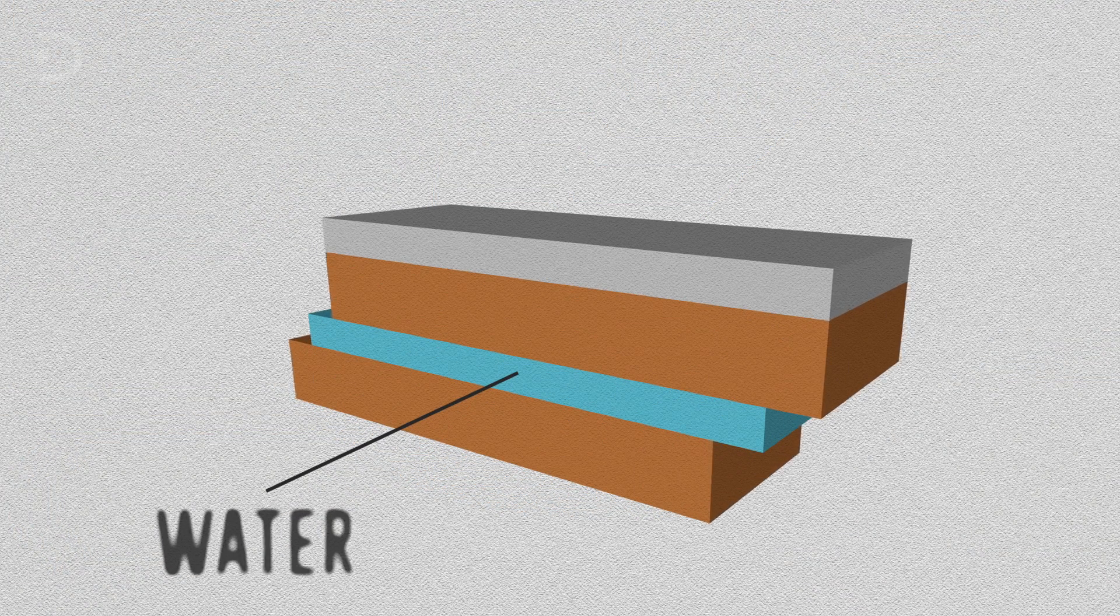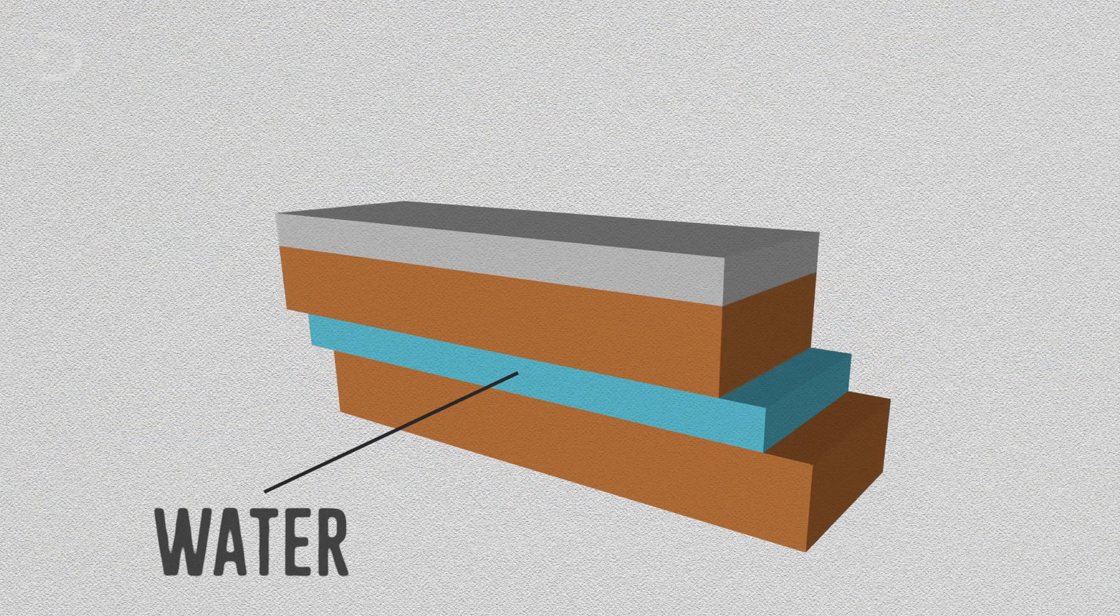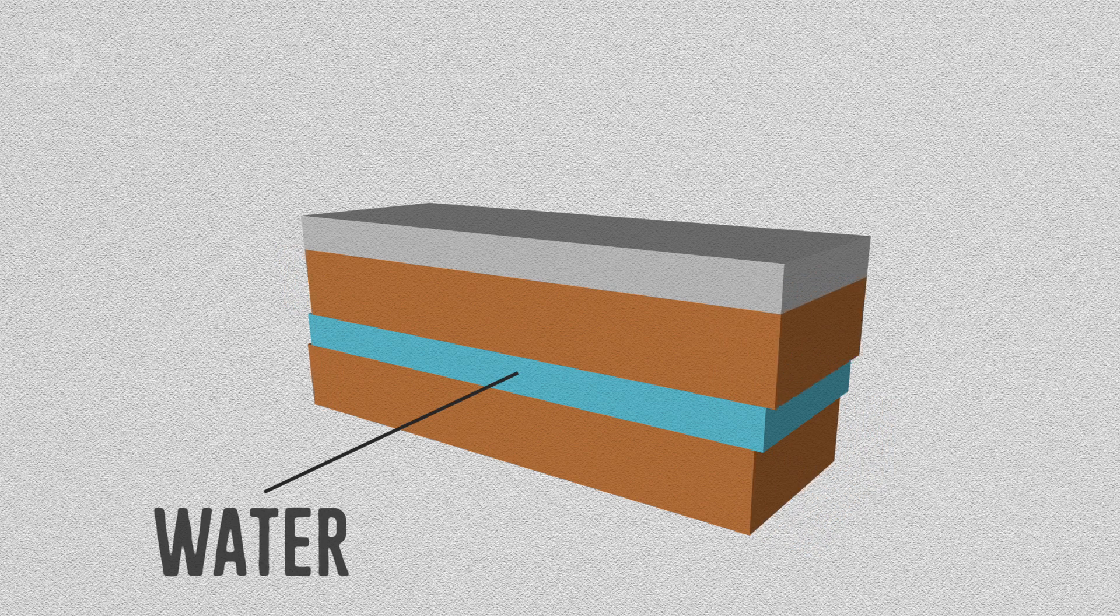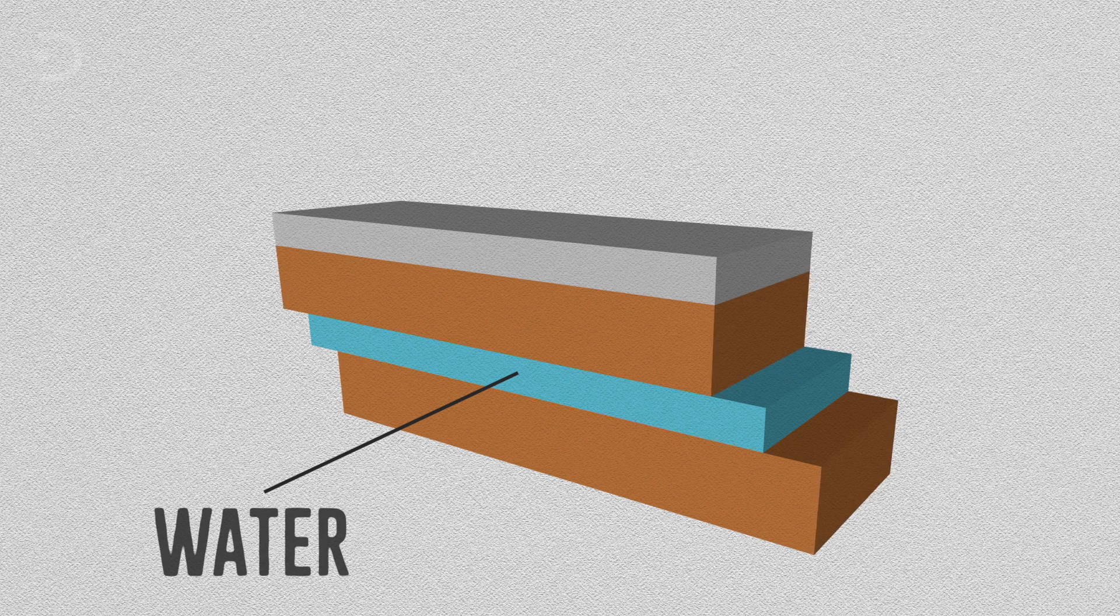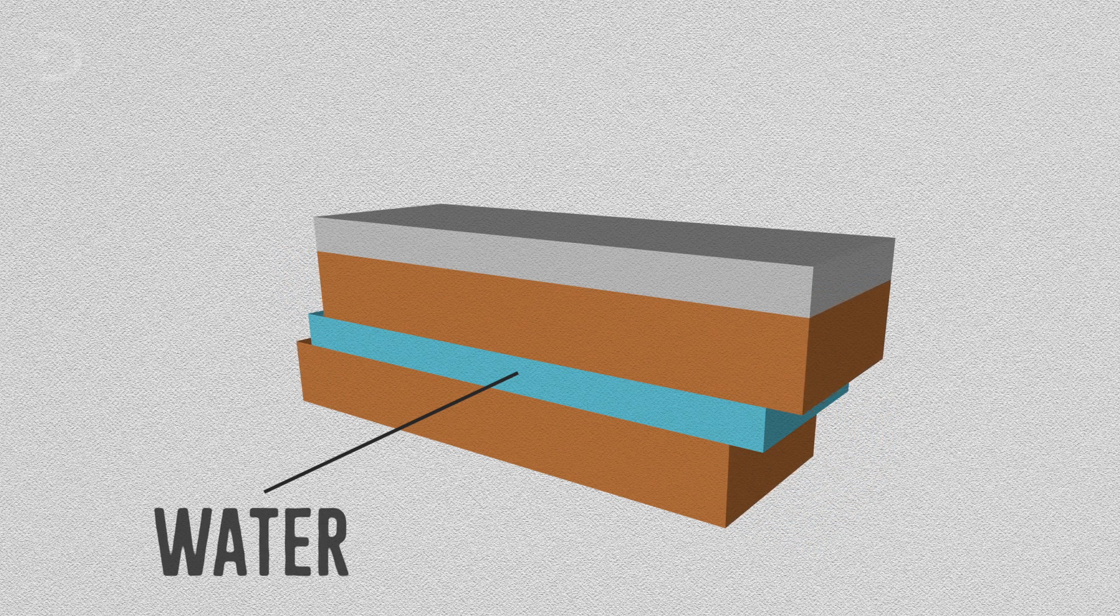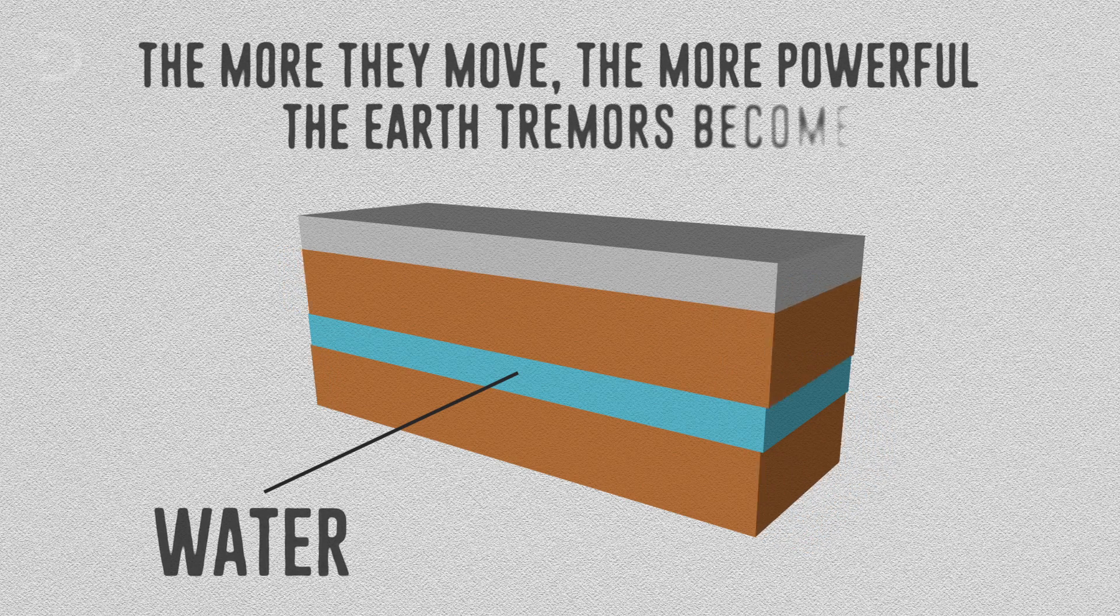It's well known that water inside fault lines and between layers of rock act like lubrication. When tectonic plates are holding a lot of water, they are more easily able to slide under each other. The movement of tectonic plates creates earthquakes, and the more they move, the more powerful the Earth's tremors become.